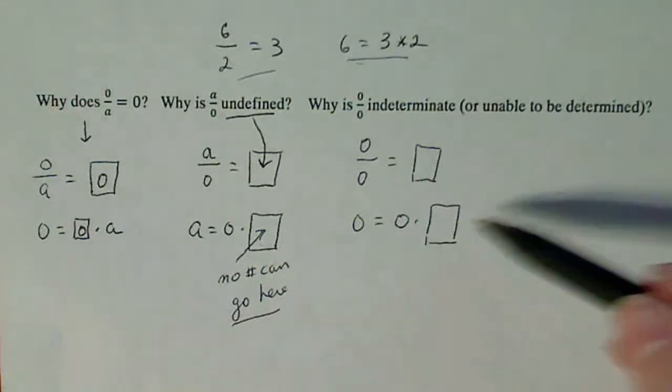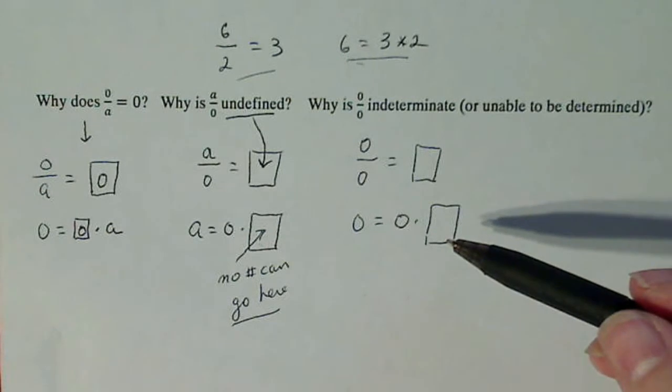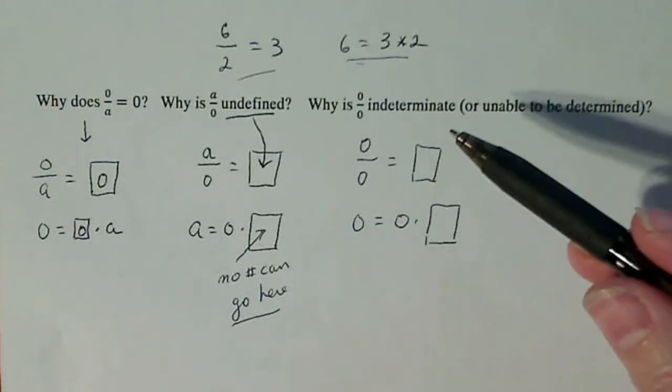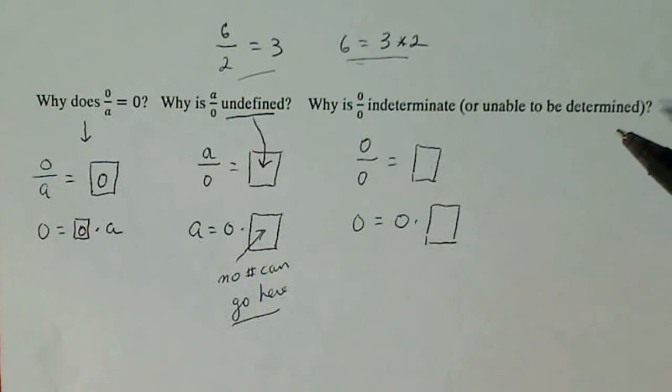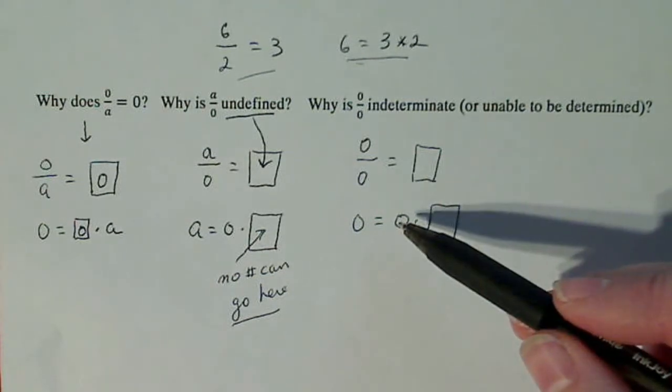And then you say to yourself, self, what number? What unique single number? Because math is based on uniqueness. If it's not unique, we say it's indeterminate or we can't determine what number it is. But how many numbers can go in the box where I can multiply it by 0 and get 0?